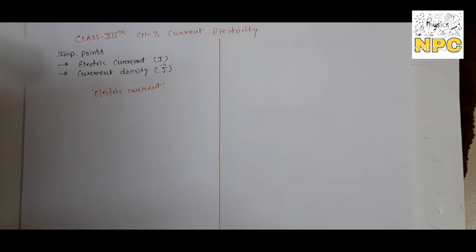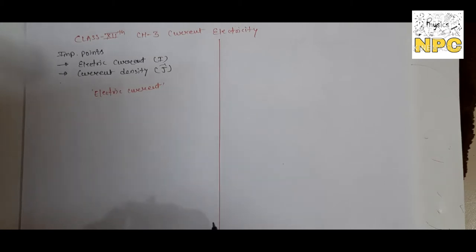We are going to start our video and the important points will be electric current and current density. These two topics we will cover in this video lecture. So first: electric current. Electric current is the rate of flow of electric charges through a cross-sectional area of a conductor.